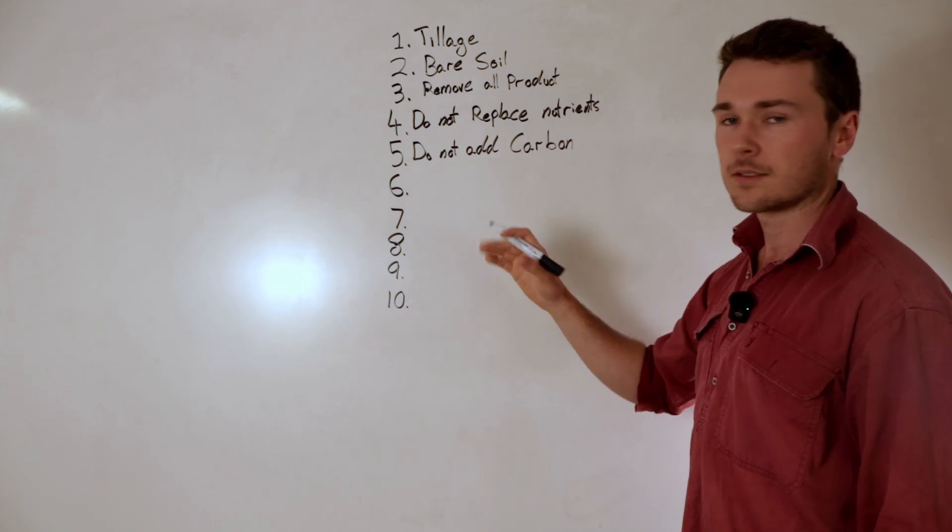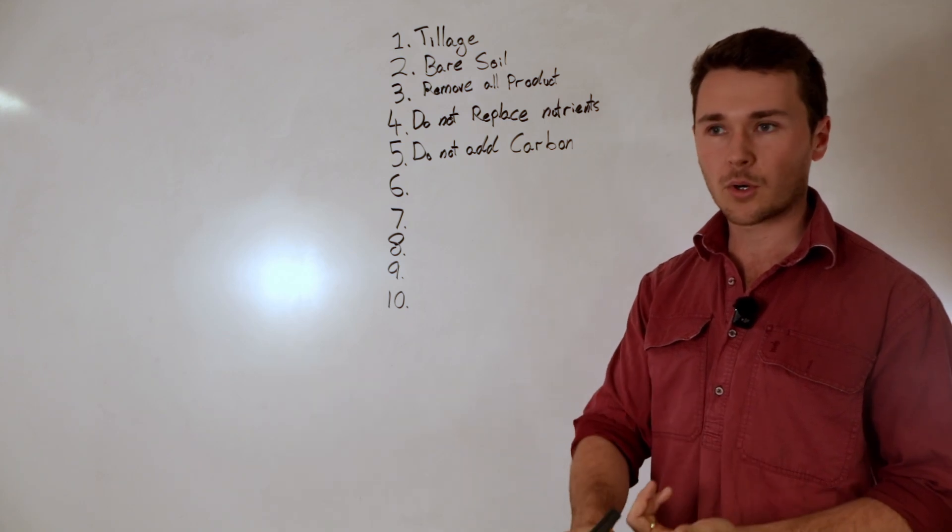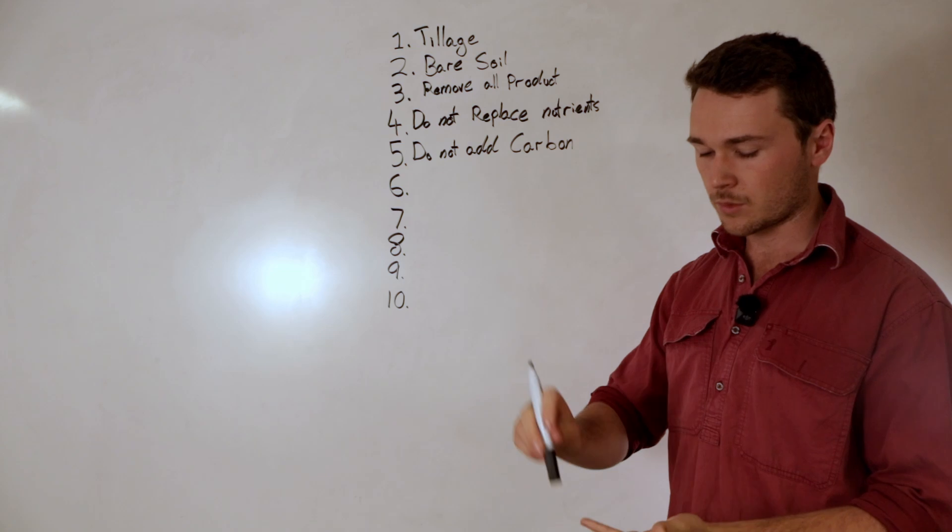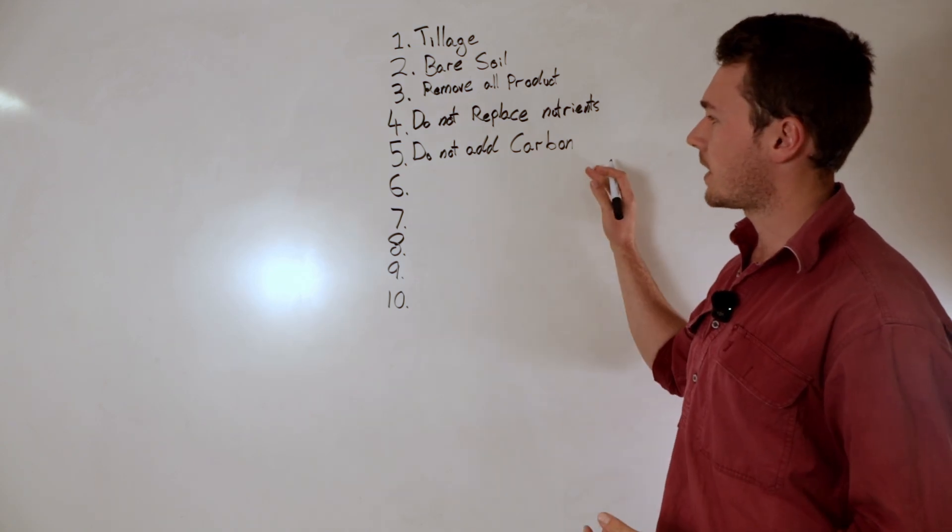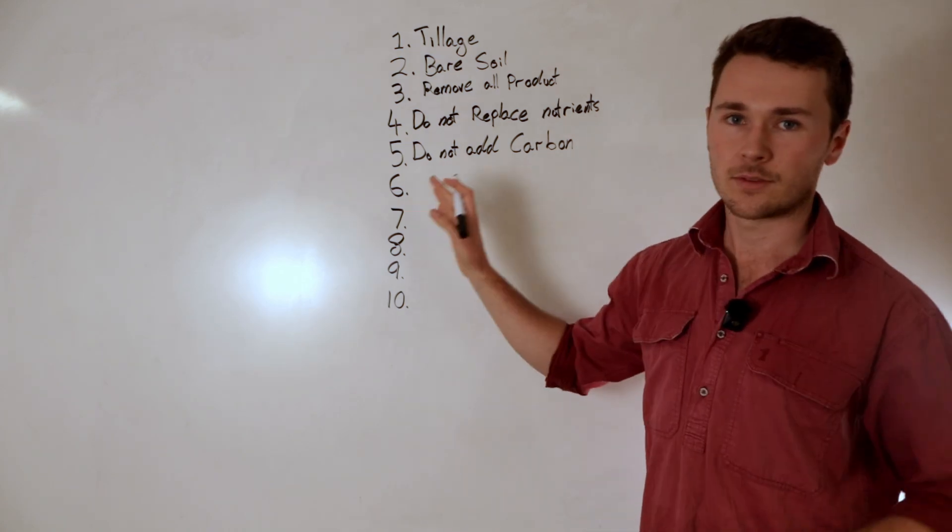In terms of specific practices it means we're not adding carbon-based products. It means we're not adding molasses as a soil primer. We're not adding our humic coatings to our starter fertilizer. We're not using compost. We're not doing any of that. So no carbon. We're not using any green manure crops. None of that. We just want to make sure we're not adding any carbon to our soil.